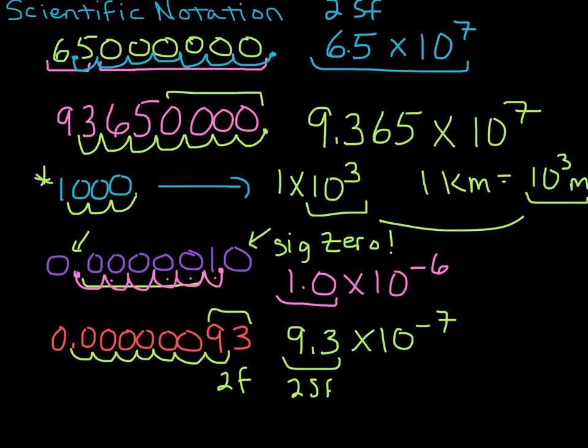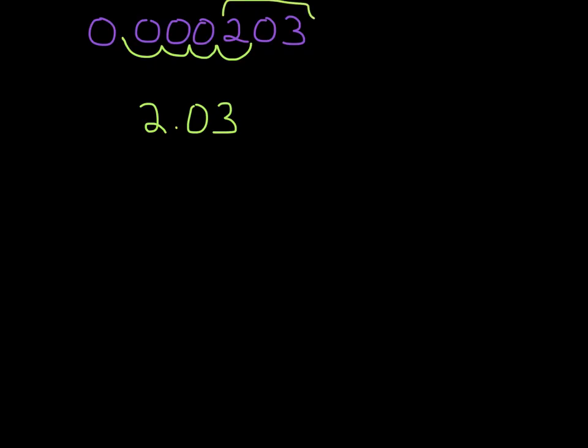So one last one for you to try on a new screen. Why don't you try putting this one into scientific notation. So one, two, three, four. So 2.03, these are all significant. So 2.03 times 10 to the negative 4. We move the decimal place to the right four places.